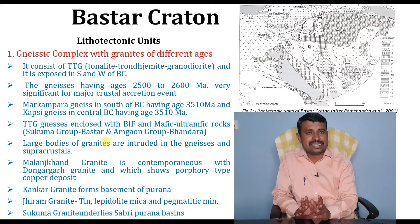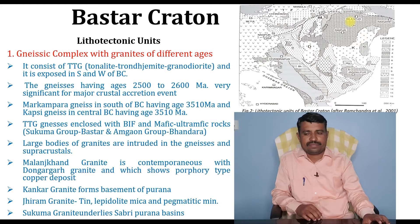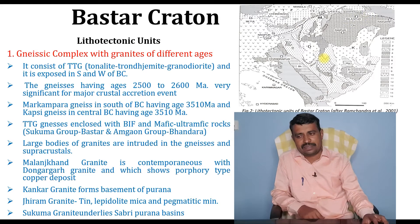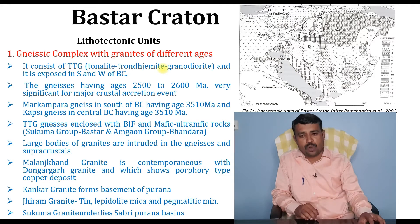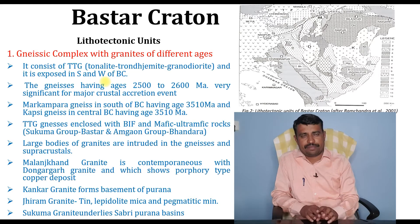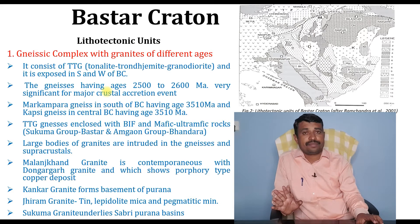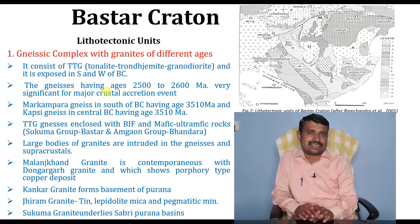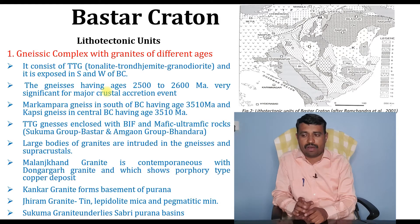First, we will discuss the Gneissic complex with granites of different ages. This first unit consists of TTG — Tonalite, Trondhjemite, and Granodiorite — which is exposed towards the south and western part of the Bastar Craton. The Gneissic complex present in the Bastar Craton has ages of 2500 to 2600 million years. This is significant because major crustal accretion events have occurred, and these events are recorded in these TTG gneisses.